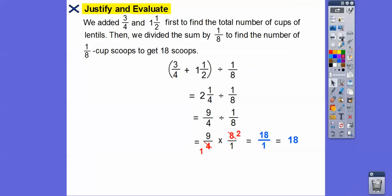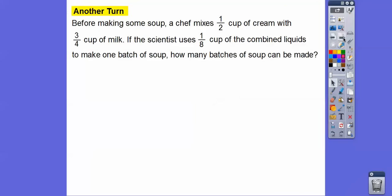Here's what we did: we first added three-fourths and one and one-half to find the total number of cups of lentils. Then, since the scooper only holds one-eighth of a cup, we took that total and divided it by one-eighth. We added them together to get two and one-fourth, changed it back to an improper fraction, did keep, change, flip, and found that it gives us 18 scoops.